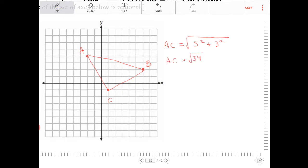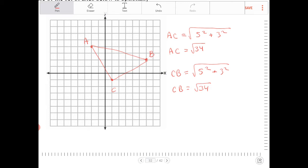And then side length CB. Going from C to B, I'm going to go 5 and up 3. So again, 5 squared plus 3 squared. So CB is also equal to the square root of 34. So I've proven the two sides are congruent. All I need to show is just two sides congruent for a triangle to be isosceles.